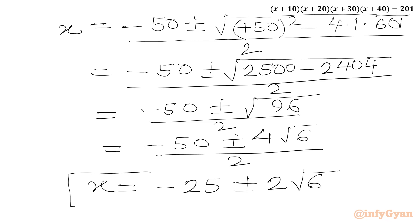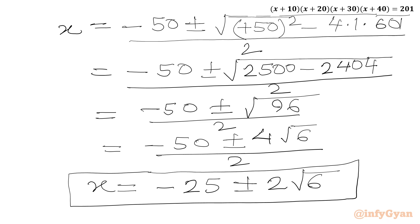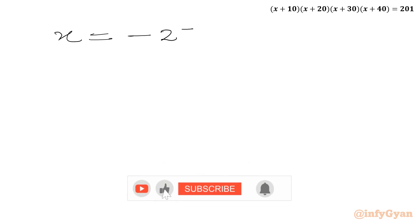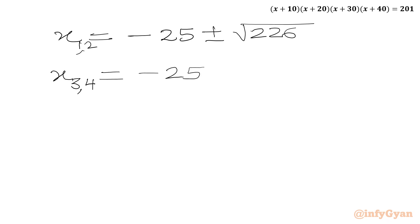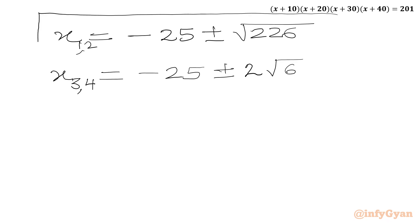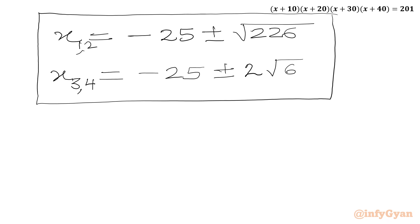So we have four real irrational roots of this quartic equation: root 1 and root 2 are x equals minus 25 plus or minus square root of 226, and root 3 and root 4 are x equals minus 25 plus or minus 2 square root 6.